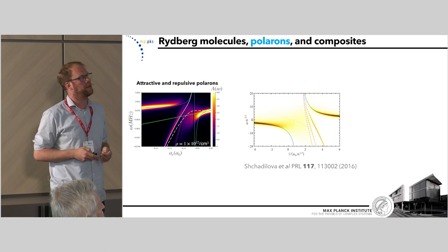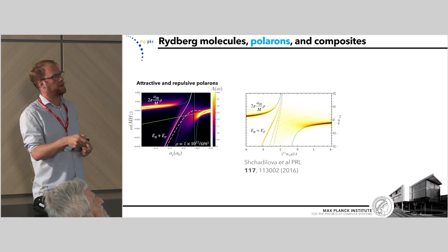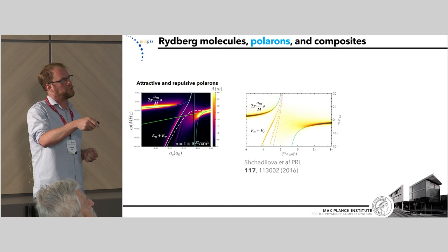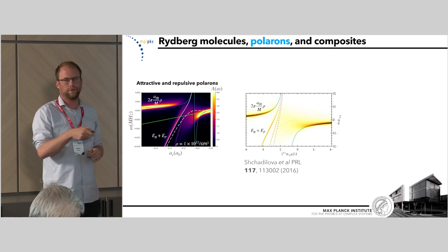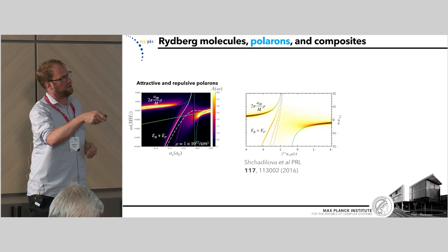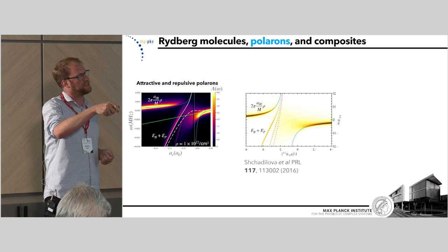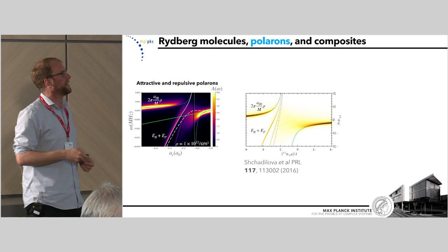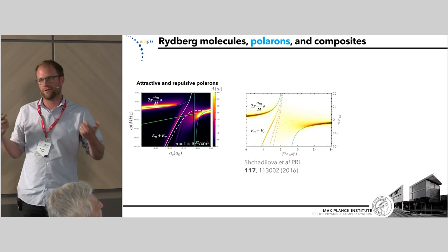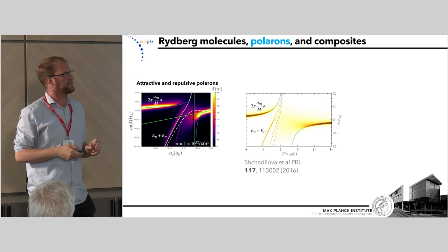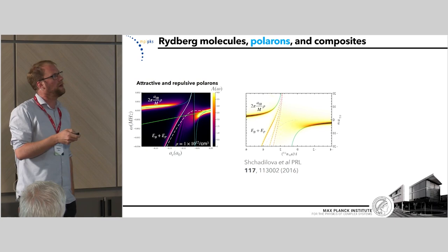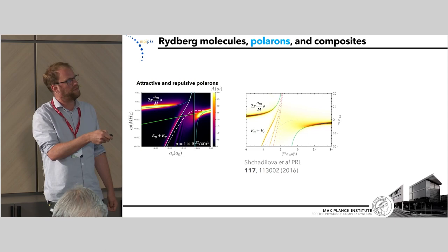We wanted to compare this absorption spectrum with a well-understood polaron case. Using the magic of PowerPoint to reverse one, we can do a one-to-one comparison, and we see an attractive polaron branch mirrored in the Rydberg case. The Rydberg-bath-particle or atom-Rydberg scattering length goes through a resonance as you deepen the electron-atom scattering length — paralleling what happens in the typical ultracold atom case — and on the other side of the resonance you see a repulsive polaron forming, exactly the same in the Rydberg case.